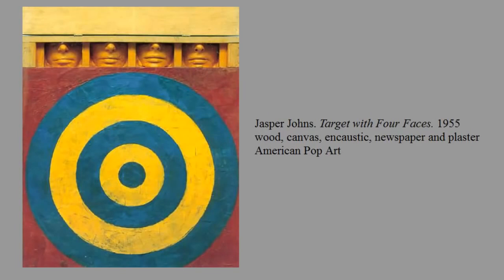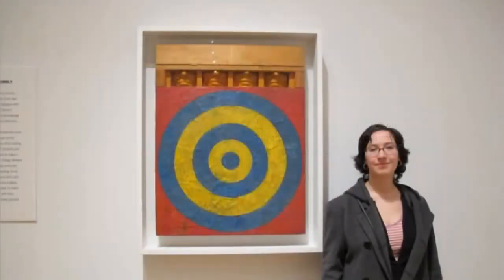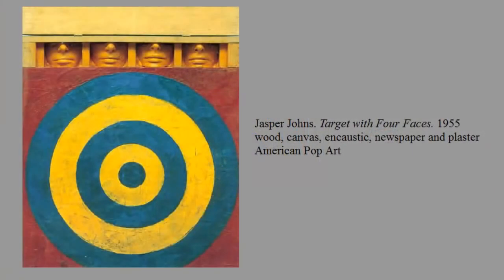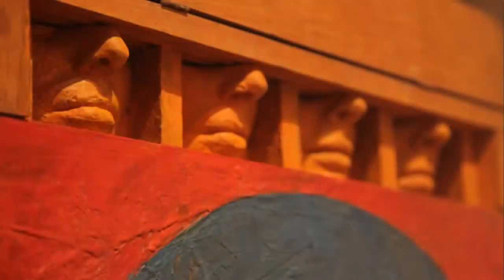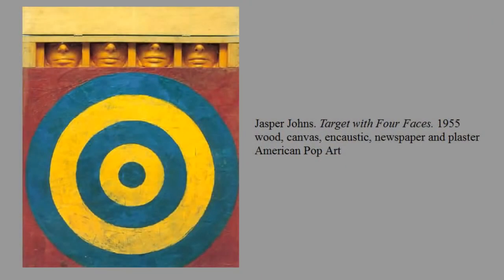Jasper Johns did a series of combine or collage-like works of art that are assemblages. Assemblage — or assemblage — is basically taking stuff and recombining it, putting it together, assembling it, and making a meaning out of it. This piece actually has plaster faces in a sort of closet on top of a canvas. It's actually hinged and looks like it could be pulled down so you could put these faces back in the closet. There's also a target, and again we have newspapers and plaster and encaustic placed over the newspaper — another sort of time capsule. And then we have another symbol, which is a target, which we all kind of get.